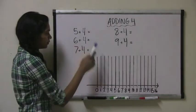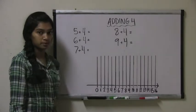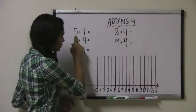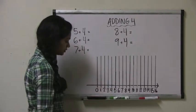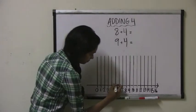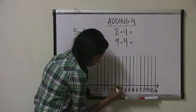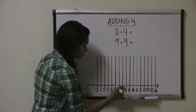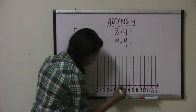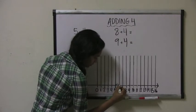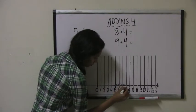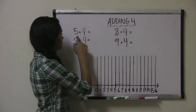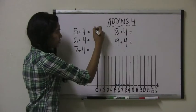So let's start with 5 plus 4 and do this problem on the number line. We start with the first number 5 and draw a dot on it. Because we're trying to add 4, we jump 4 spots forward: 1, 2, 3, 4. We land on the number 9, so 5 plus 4 equals 9.